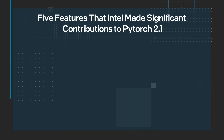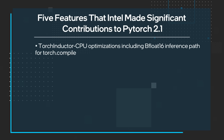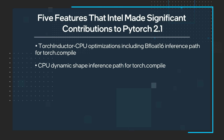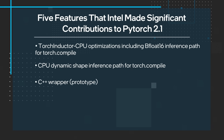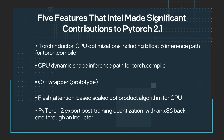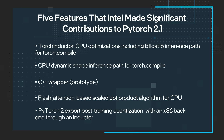First up, read the blog: PyTorch 2.1 contains new performance features for AI developers. This blog discusses the five features that Intel contributed to PyTorch 2.1: Torch Inductor CPU optimizations including bfloat16 inference path for Torch.compile, CPU dynamic shape inference path for Torch.compile, C++ wrapper, flash attention-based scaled dot product algorithm for CPU, and PyTorch 2 export post-training quantization with an x86 backend through an inductor.